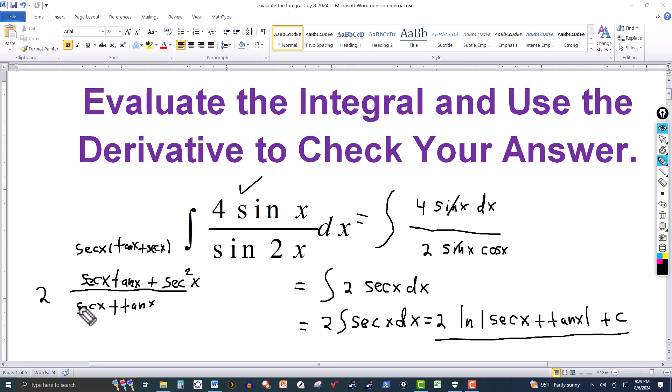We have secant of x tangent of x in the denominator, which is this right here. So this cancels out. This cancels out gives me a 1 times a 2. And of course the secant. So I have in the numerator, in the numerator that I have left, 2 rather, secant of x.